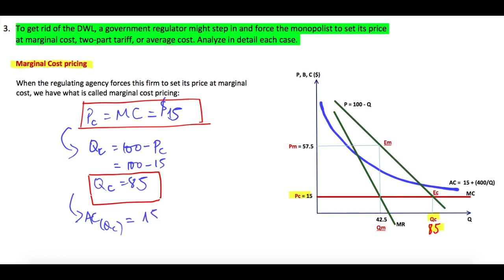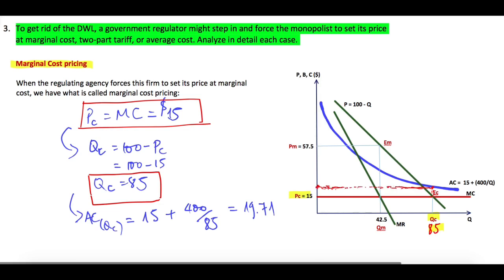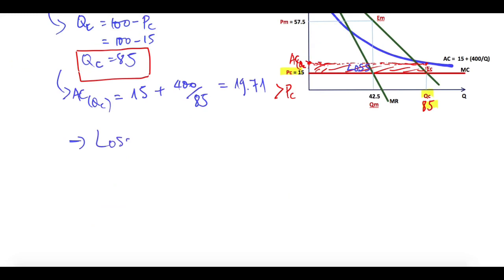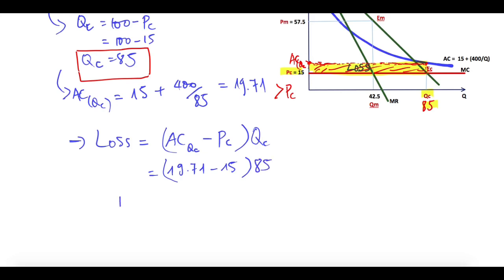At output Qc, average cost equals 15 plus 400 over 85, which equals 19.71. In the graph, line up from the intersection point to the average cost curve — the corresponding AC at Qc is 19.71. Since average cost is higher than the price of $15, the firm makes a loss equal to the shaded area: (AC at Qc minus Pc) times Qc, which equals (19.71 minus 15) times 85.